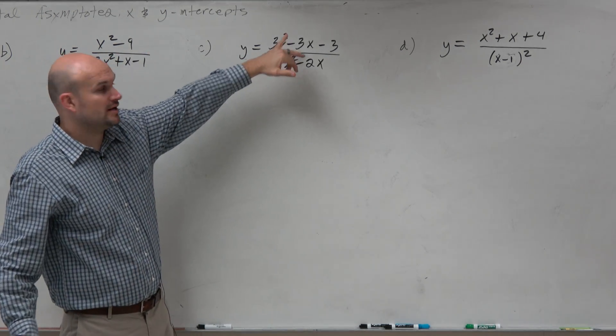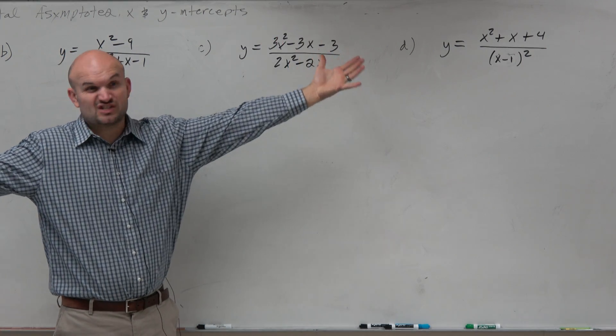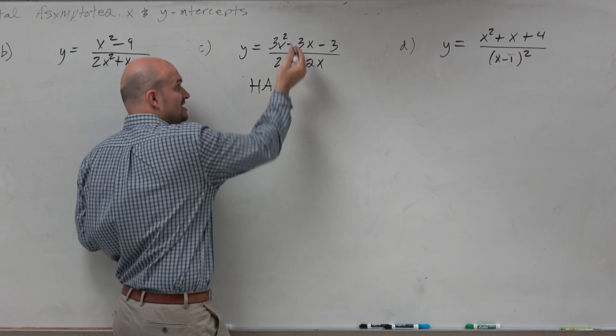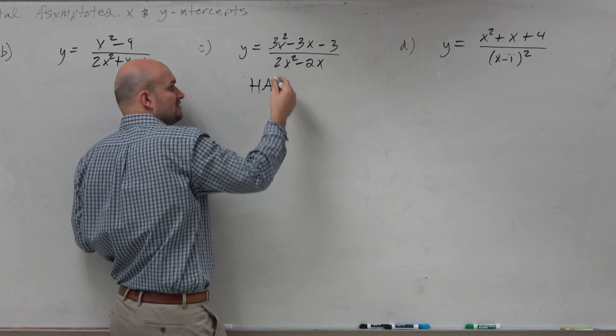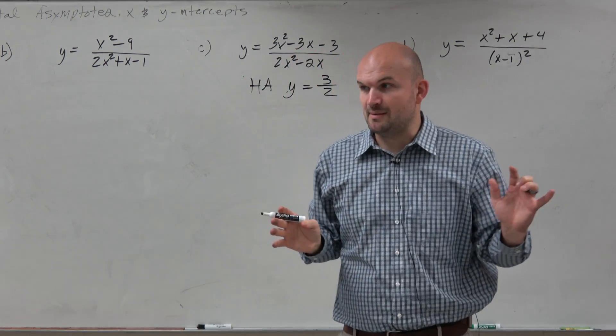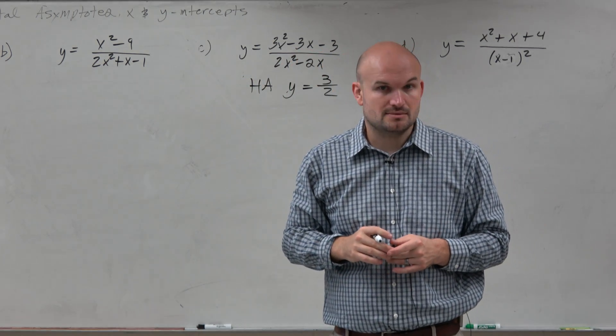The highest power is always listed first going down. So here you have x squared, here you have x squared. Those are both the degrees that are exactly the same. So my horizontal asymptote is just the leading coefficient of my numerator over the leading coefficient of my denominator. That's it. Not much math needs to be done.